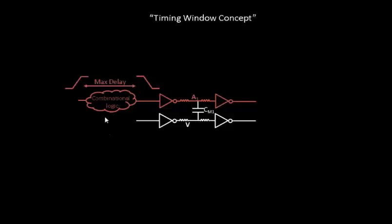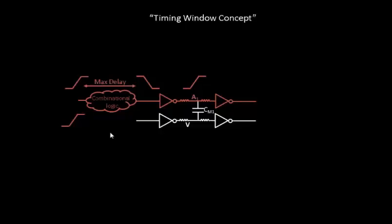We'll take the worst case delays of each and every gate which is present in the combinational logic and then calculate the maximum delay. Finally, eventually this signal reaches at this point with the rising edge. Next, what we'll do is we'll take the same signal and